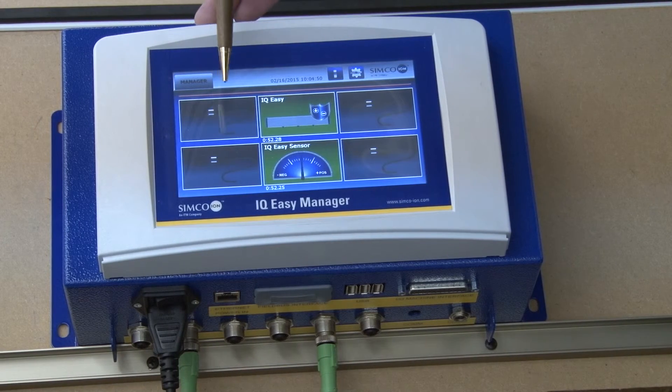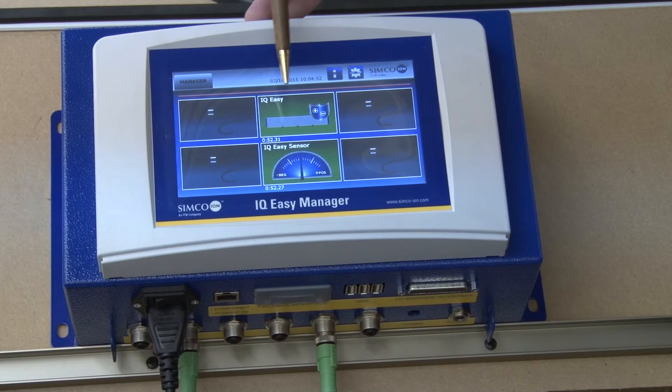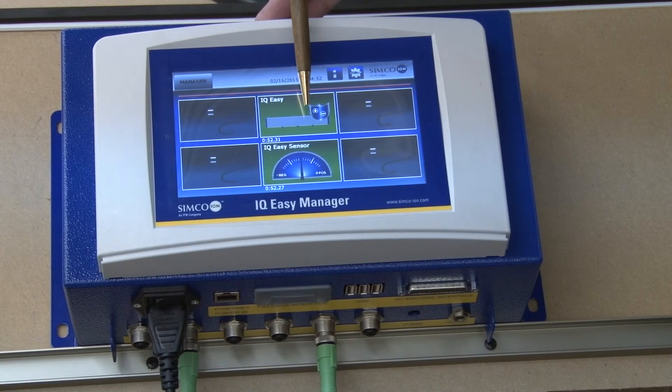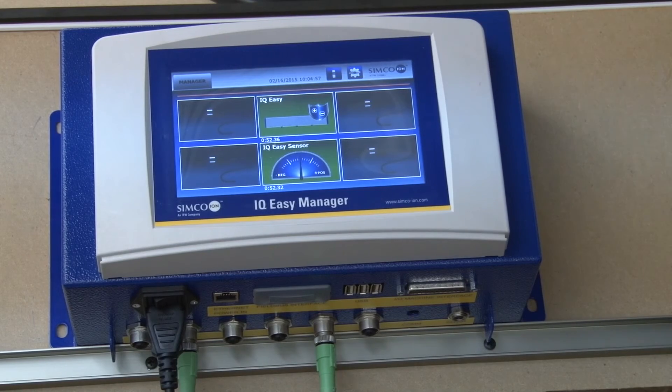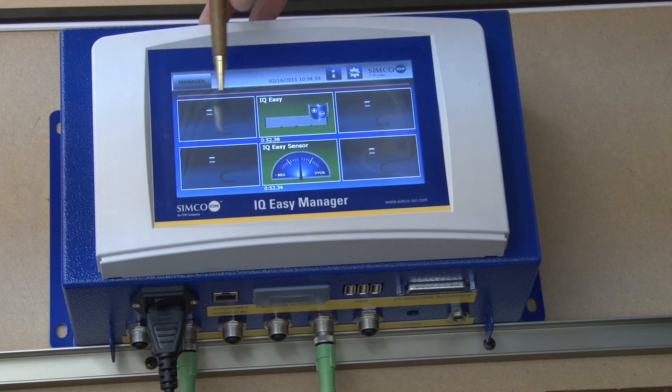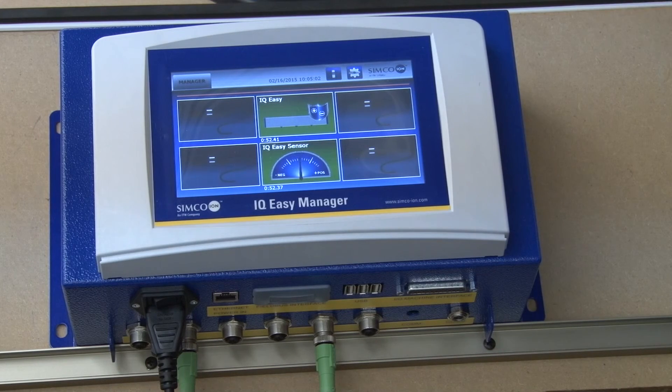And those locations show up on the screen in locations 1, 2, and 5. So if we moved one of the devices to a different port, it would simply show up in that slot. So unlike other systems, no addressing of devices is required for this system.